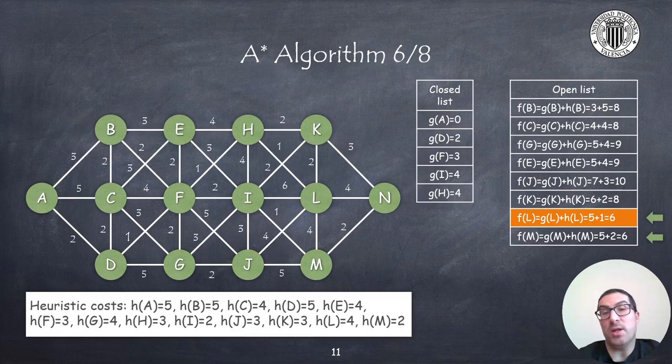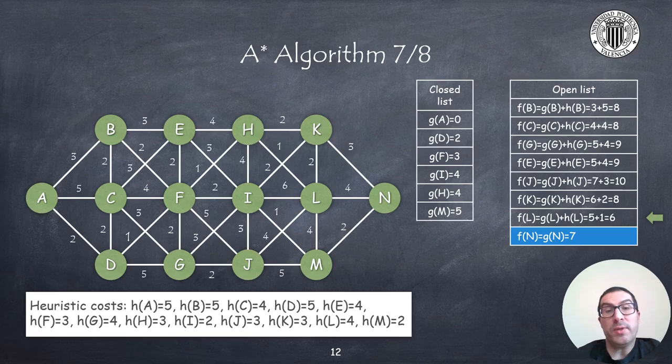So now, I have selected node H, which causes the node L to be updated, and now L and M are the nodes with the lowest cost again, with a tie. So, let's say I select node M. So, now node N is added to the open list, which clearly is an indication that somehow we are close to the solution.